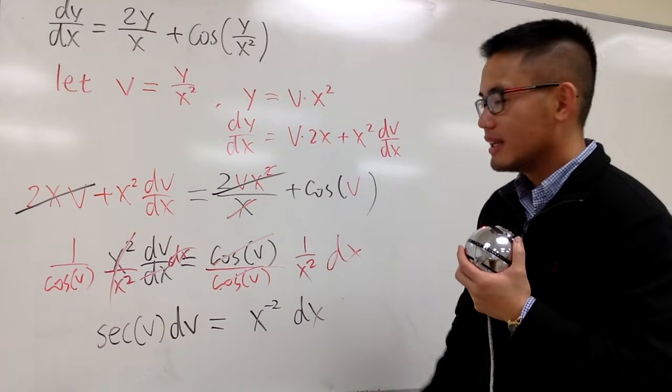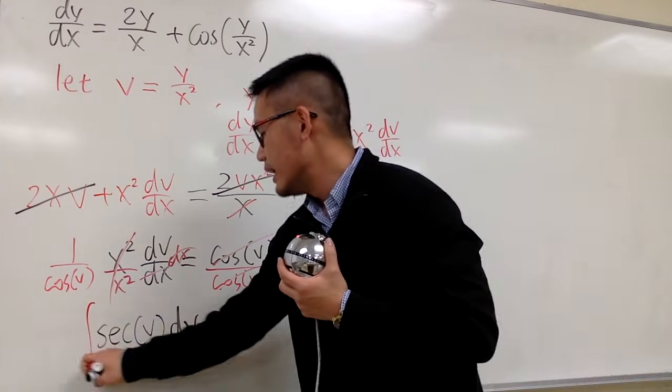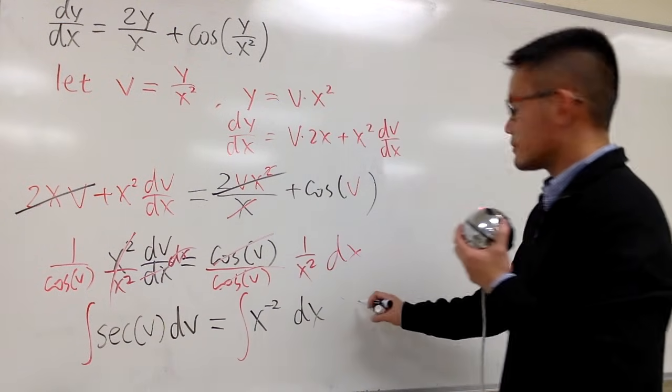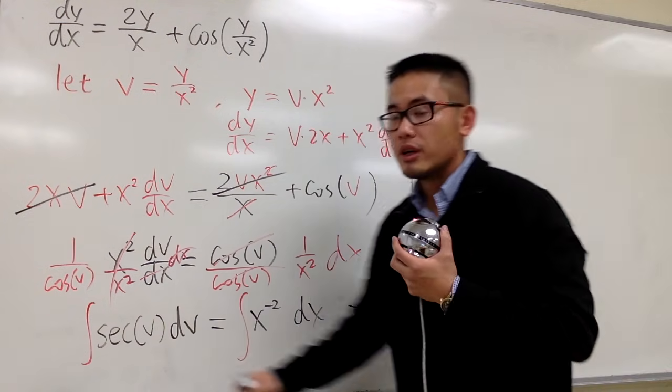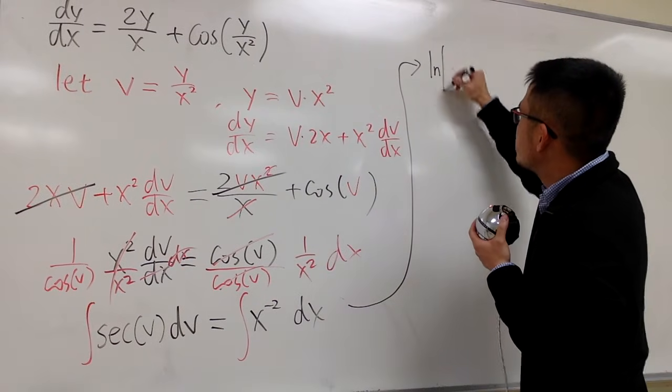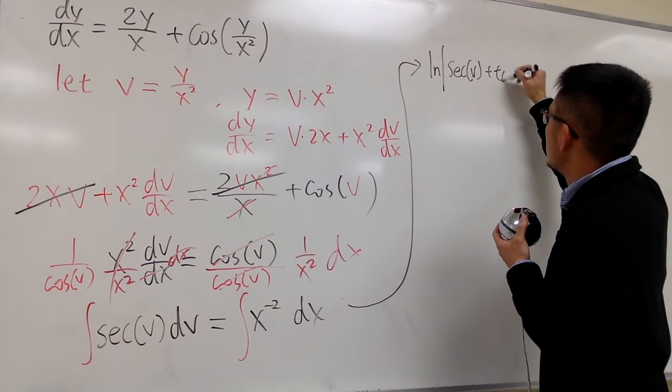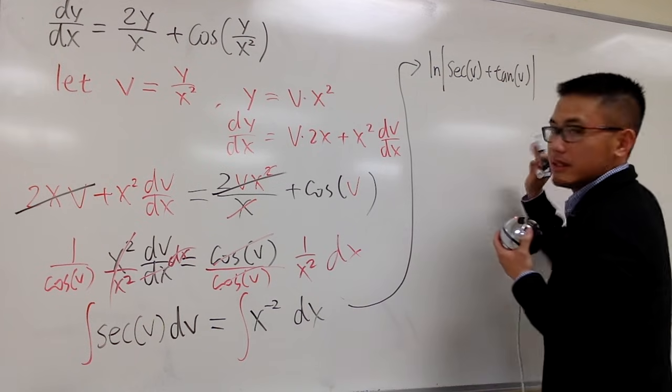These and the x's, right? So now I can just go ahead, integrate, integrate, and let me put down the answer here. The result of the integration right here is, first we will have the ln absolute value of secant v plus tangent v, like this.